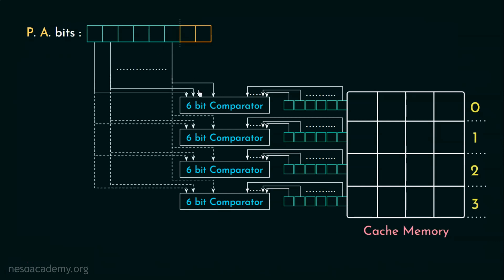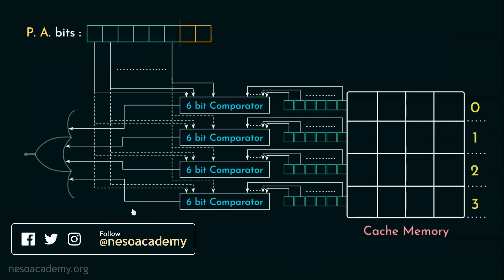Now, the outputs of the comparators will be given as input to a multi-input OR gate, so that it can indicate the cache hit if any of the lines have the required block. And worry not, only one of the cache line is going to have the block if that is present in the cache in the first place. Cache is very expensive and limited in size. So having more than one copy of the same data is not really a smart way to utilize it.